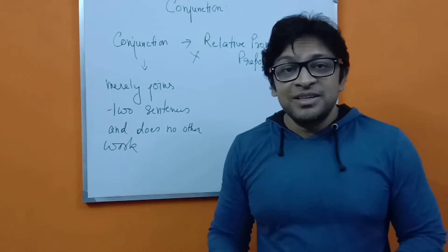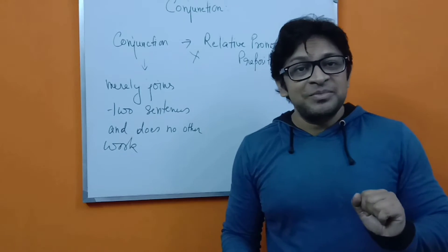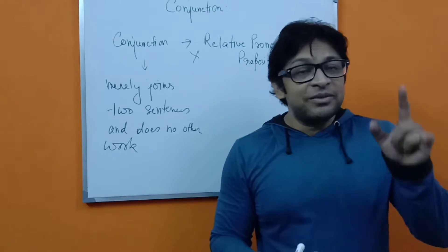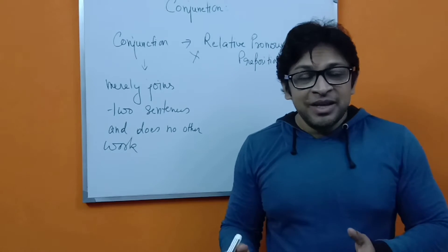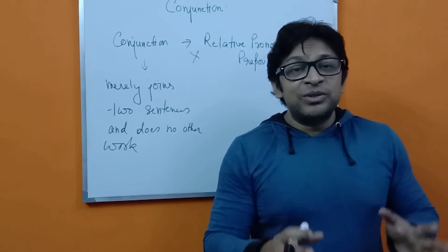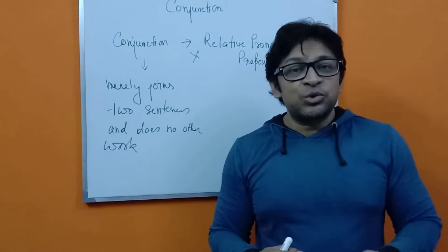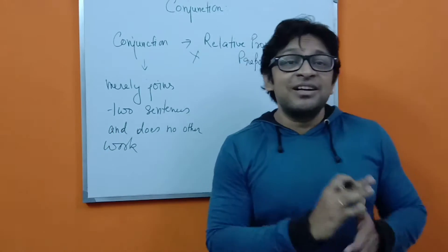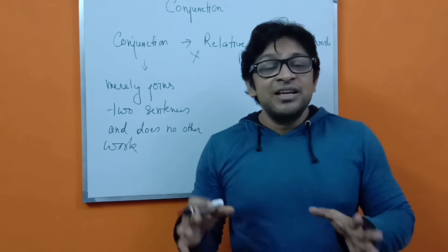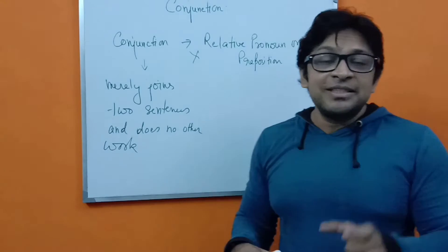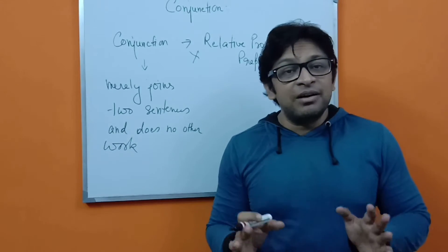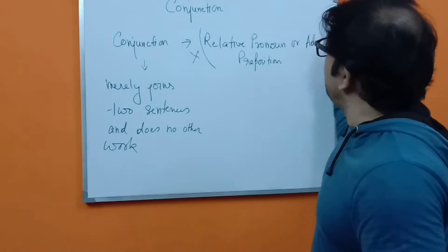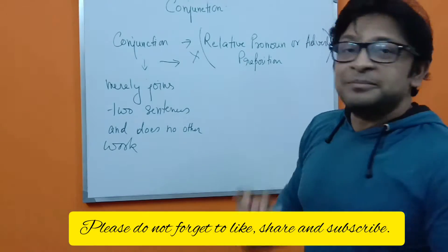A conjunction only joins two sentences but does not perform any other function. Relative adverbs and relative pronouns, however, do more than joining — they modify the verb. For example, 'the house which you know is built by Jack' — the word 'which' shows the house belongs to or is built by Jack. Similarly, 'this is the place where he was murdered' — 'where' modifies the verb 'murdered.' So these are far more different from a conjunction.